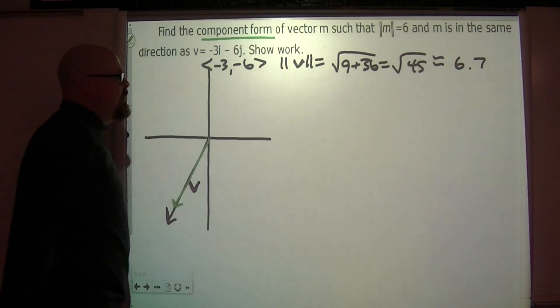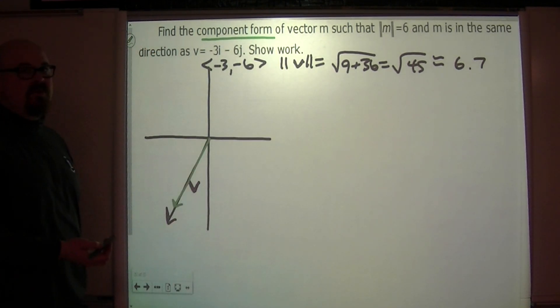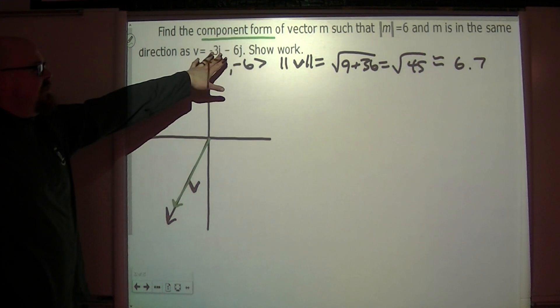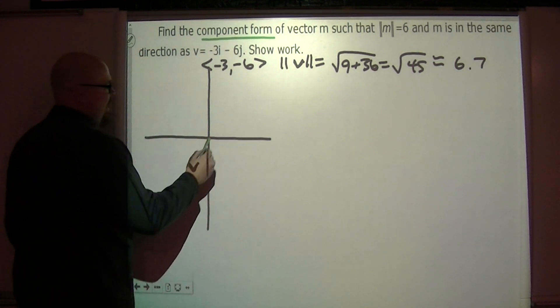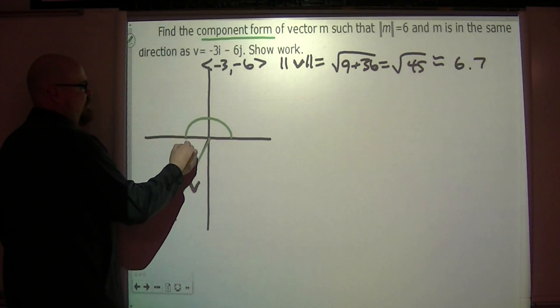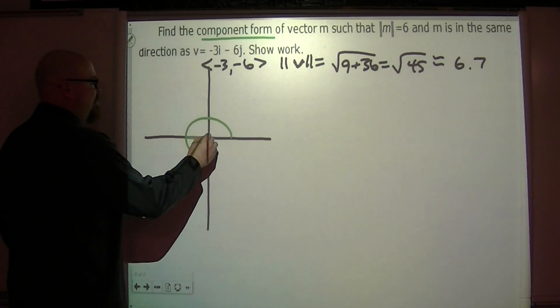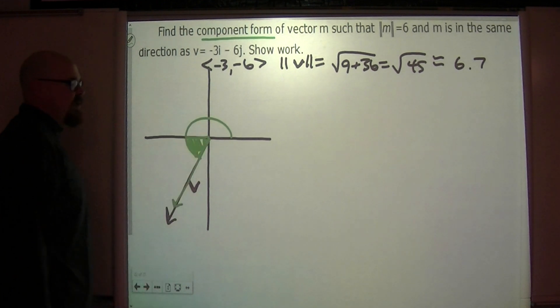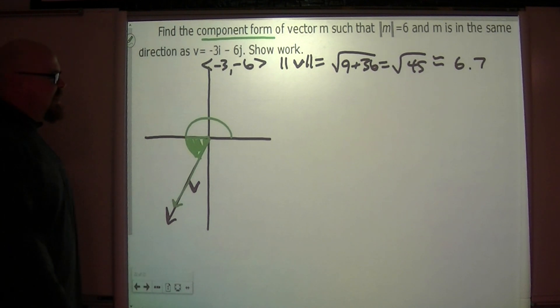But to express that, to say it's in the same direction and to say we want the component form, we need to know the direction of this vector. So that's why they're giving us v. That's why they're giving us this vector so we can find the direction angle for v. Remember, it's really this, this is the direction angle of v, but we're only going to be able to find this piece right here.